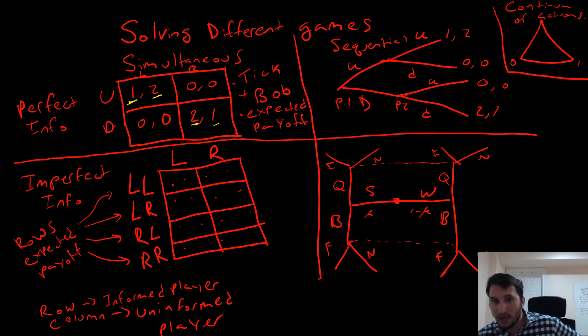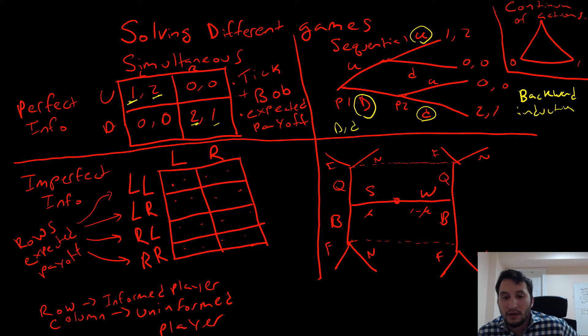For our sequential games, we're going to use backward induction. What this means is that we start at the end of the game and we look at this node: what is the best response of our player two? It's going to be U. And at this node, what is the best response? It's going to be D. If our player one is considering these two options, you should pick D. So our subgame perfect equilibrium is going to be D, D.